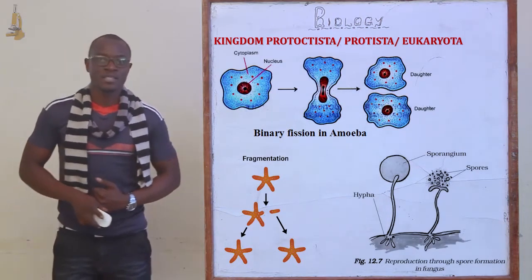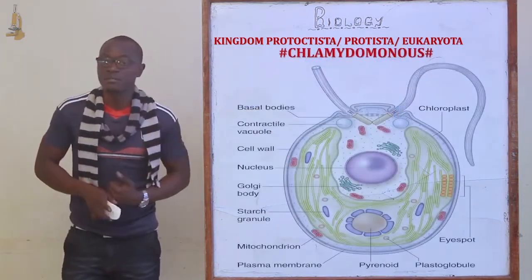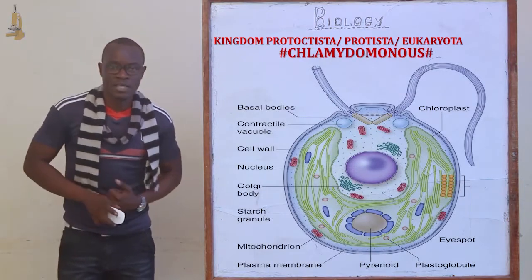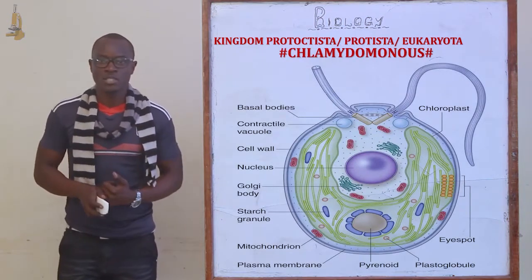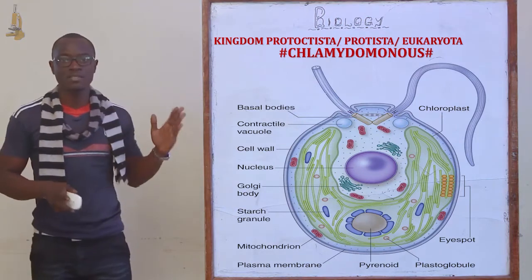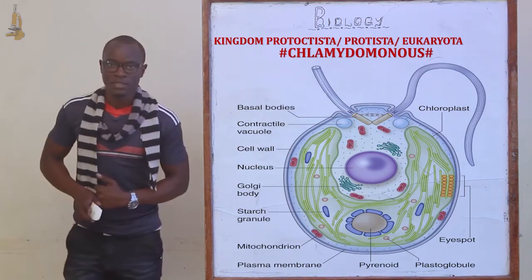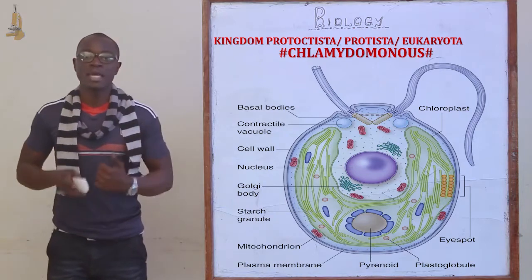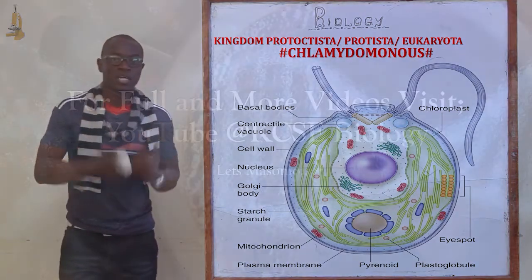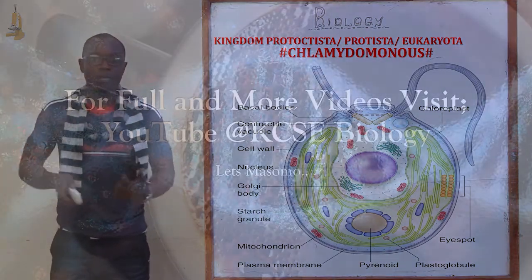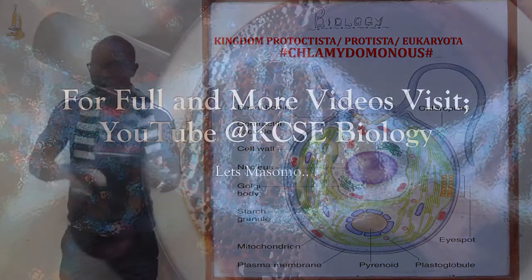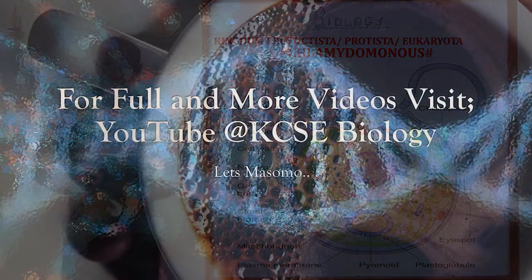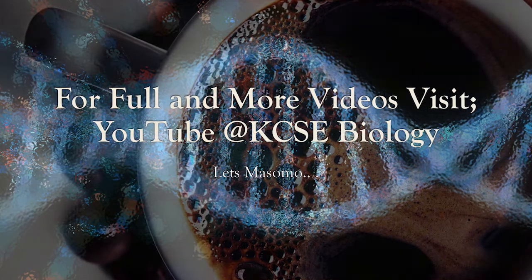Let's look at the first organism under this kingdom, which is a single-cell algae referred to as the Chlamydomonas. As you can see, this is the Chlamydomonas. These Chlamydomonas are plant-like Protoctista. They contain chlorophyll and they are autotrophic, meaning that they make their own food from the surrounding light in the environment.